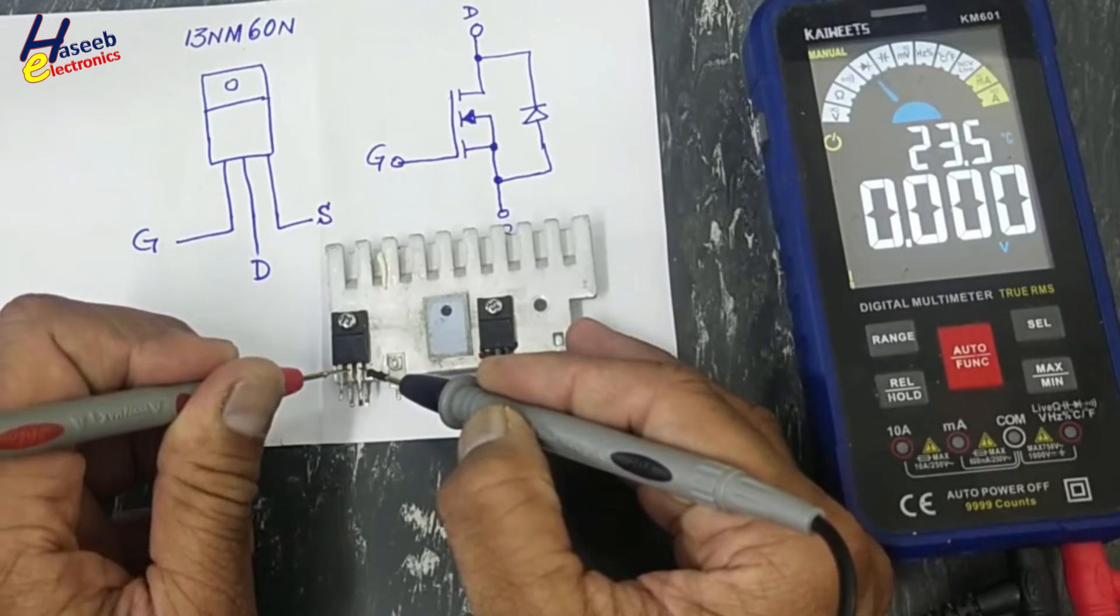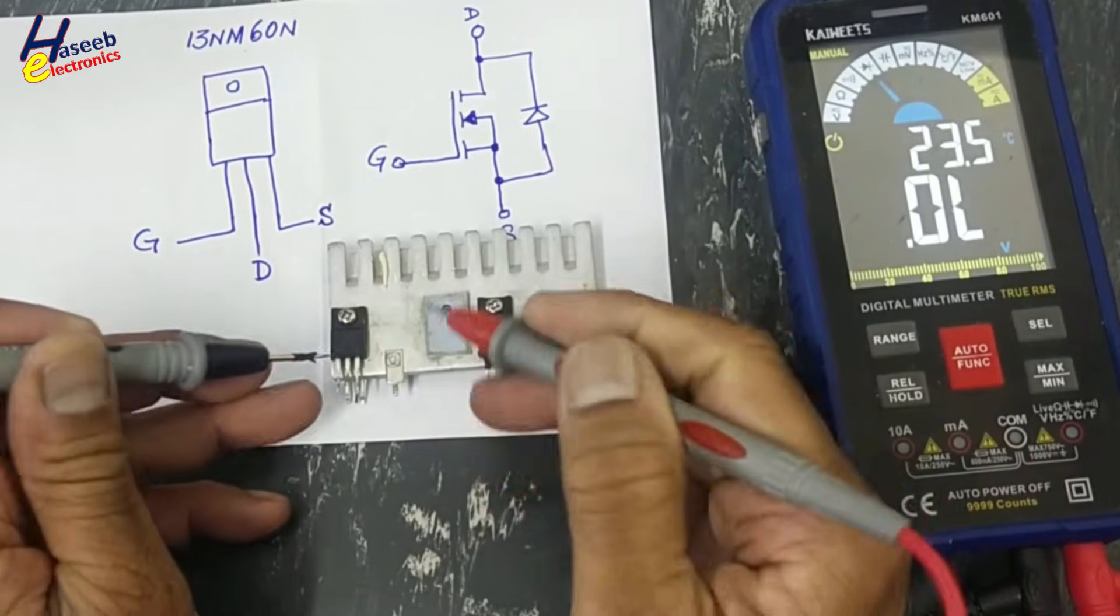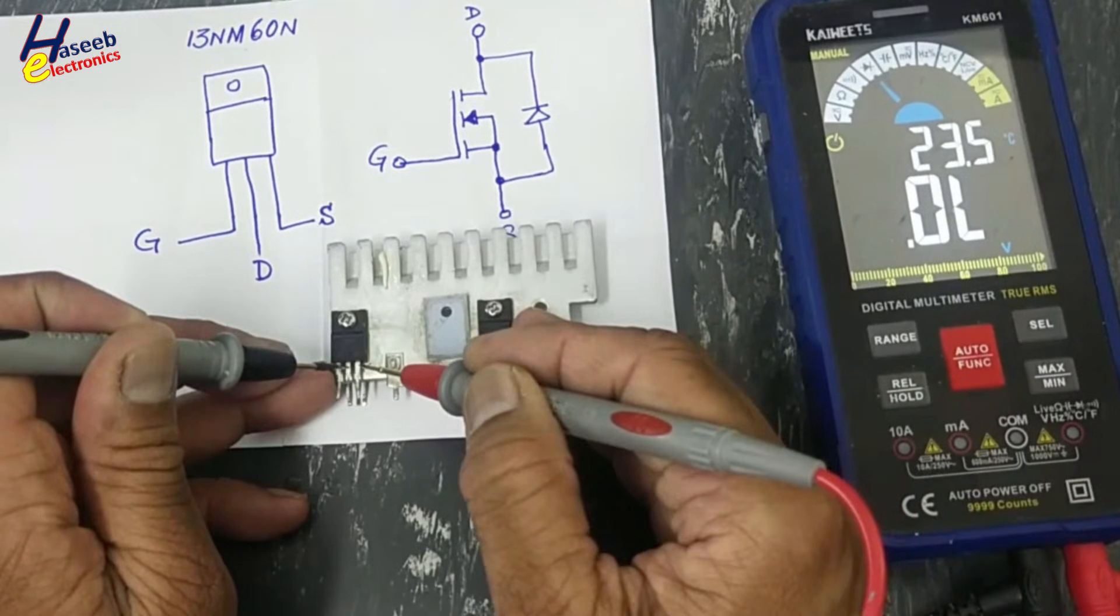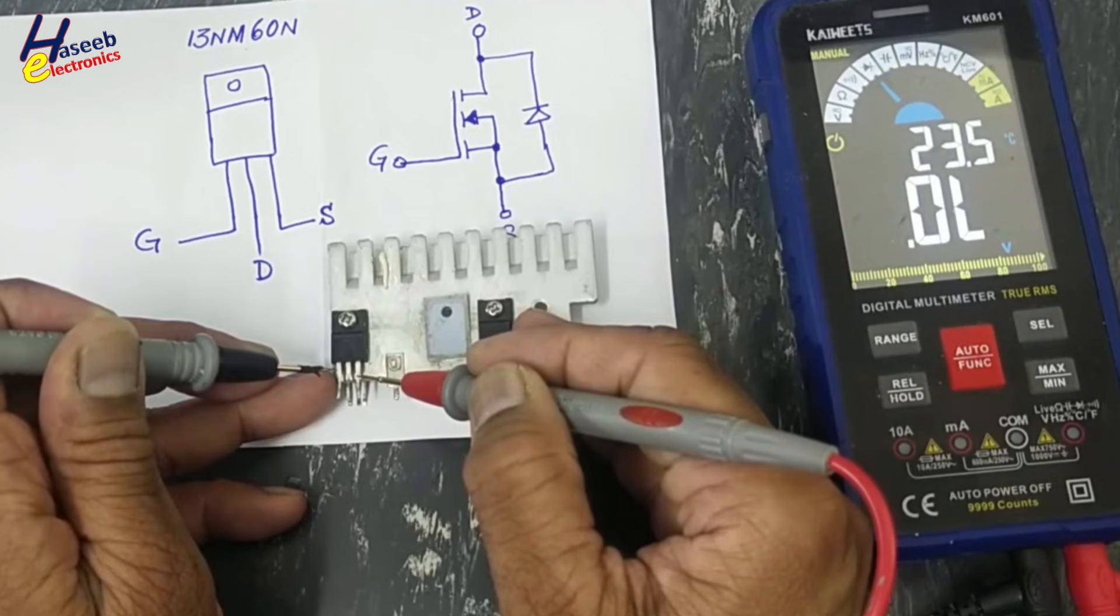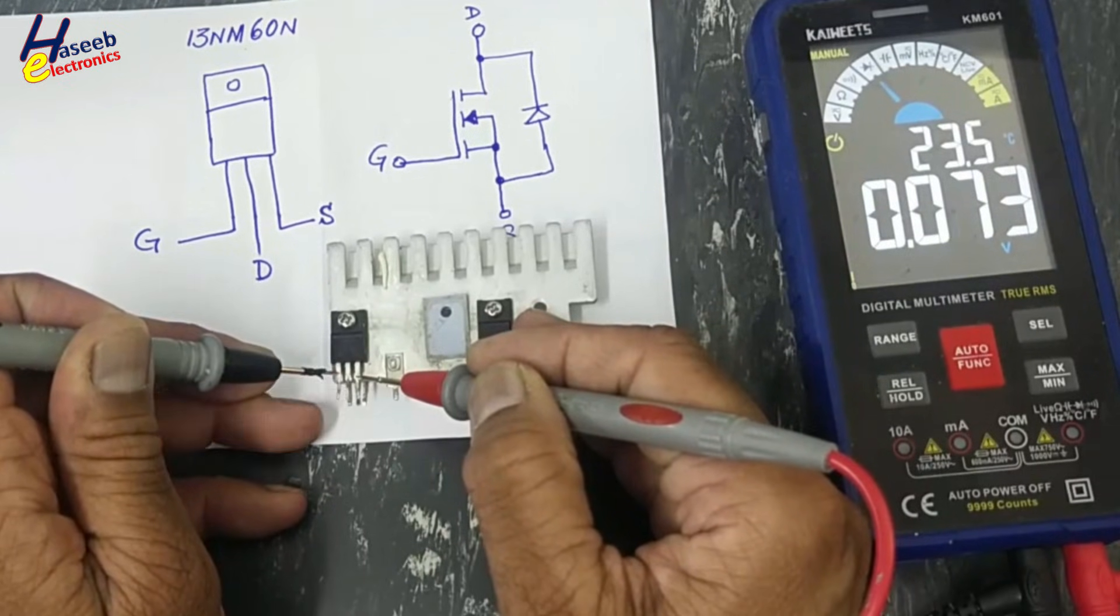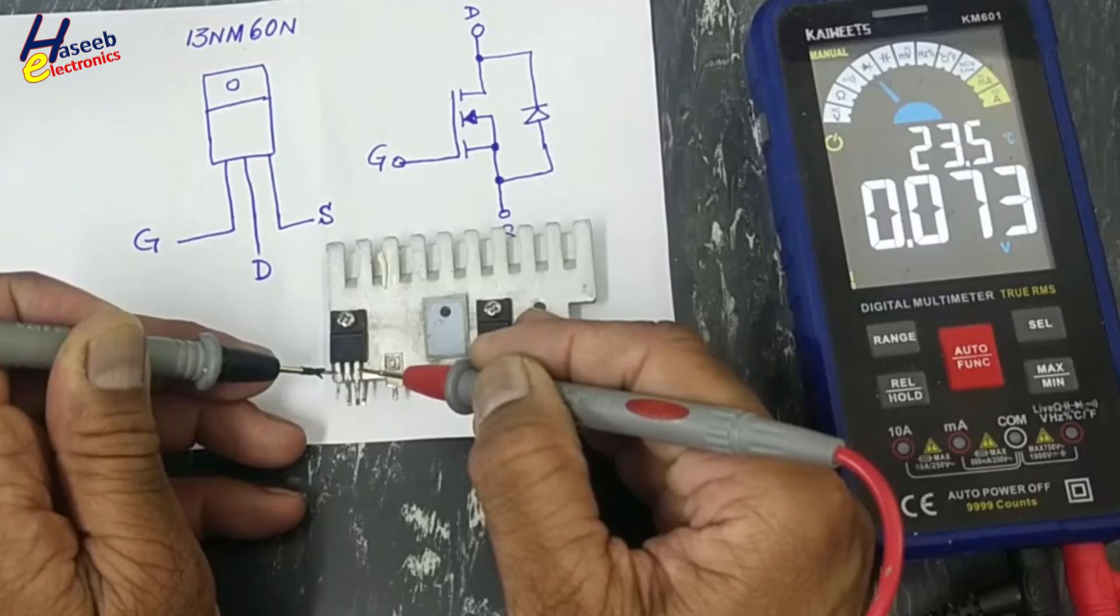Here drain to source short circuit. Reverse the leads - short circuit. If I try to discharge it...